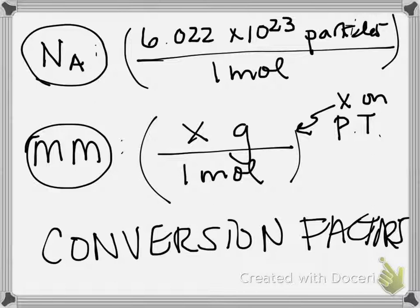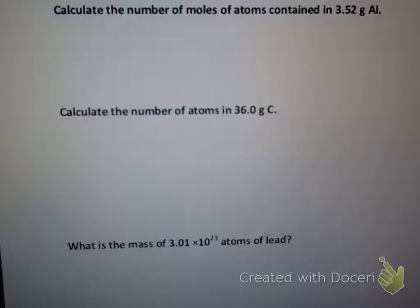Make sure you understand what Avogadro's number and molar mass conversion factors are. Let's do more practice problems. Always have a periodic table with you when studying chemistry — it's your best friend. When doing these conversion factor problems, converting amounts of a reagent to a different quantity, always have a periodic table. The first question: calculate the number of moles of atoms contained in 3.52 grams of aluminum.